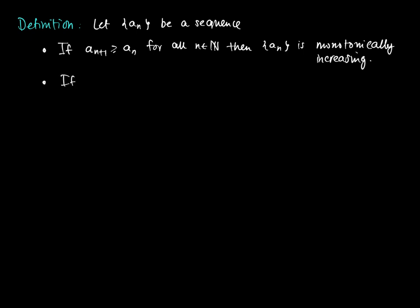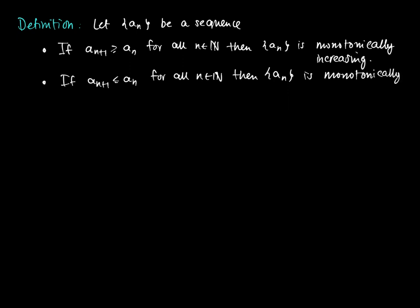If something similar holds but with the converse inequality — so if a subsequent element is smaller than its predecessor, for all n in the natural numbers — then we call the sequence monotonically decreasing.